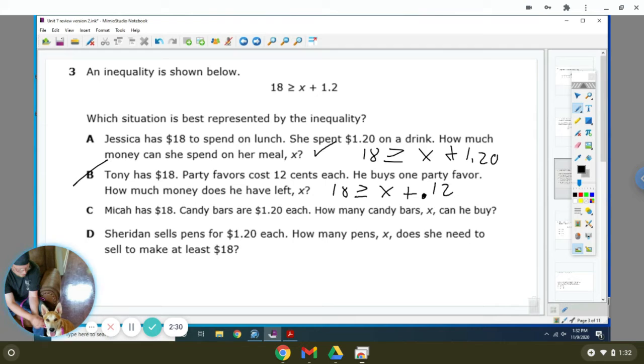Micah has $18. Candy bars are $1.20 each. How many candy bars can he buy? So it's still $18 is greater than or equal to, but it would be 1.20 times x, because it says each. That means it's being multiplied. Sheridan sells pens for $1.20 each. How many pens does she need to sell to make at least $18? Same thing, but the sign is still wrong. So A is correct.